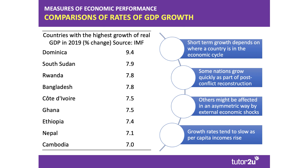Other countries might be growing quickly perhaps as part of post-conflict or post-civil-war reconstruction, with a lot of investment coming in and driving growth. Or perhaps they have discovered new natural resources, acting as a catalyst for inward investment. Other countries might be growing more quickly or more slowly because they're affected by external economic shocks, and those shocks tend to have an asymmetric effect — impacting some countries and regions more than others.